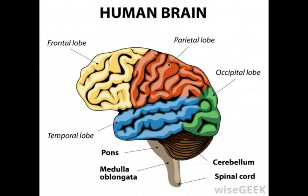Purkinje, spelled alternatively as Purkinje, also discovered Purkinje cells, which are large neurons located in the cerebellum. In addition, he is credited with the discovery that red-colored objects appear to fade faster in dim light conditions than those that are blue.